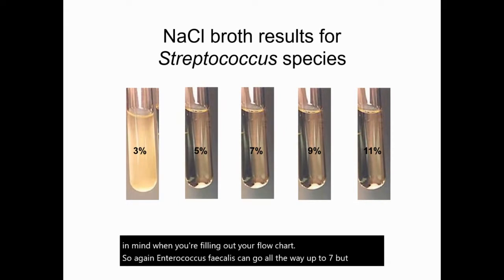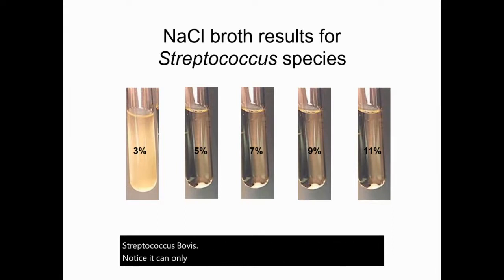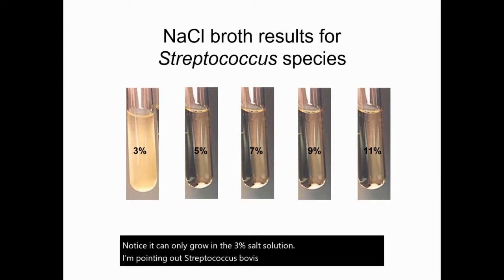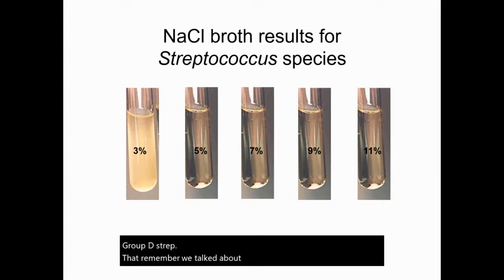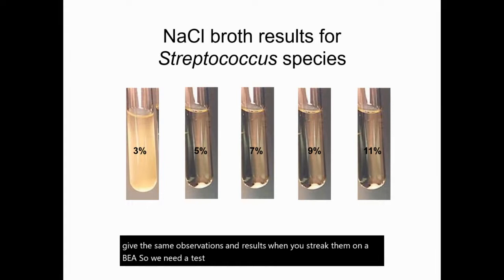Enterococcus faecalis can grow all the way up to 7%, but look at what happens for any of the Streptococcus species, including Streptococcus bovis — it can only grow in the 3% salt solution. I'm pointing out Streptococcus bovis because this is our other group D-Strep, and as we discussed in the BEA video, both D-Strep organisms give the same observations and results when streaked on a BEA. So we need a test to differentiate those two organisms, and salt broth is how you do it.